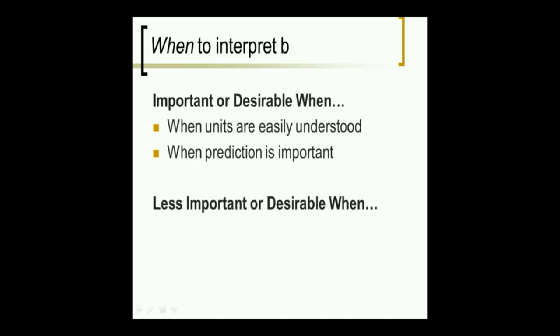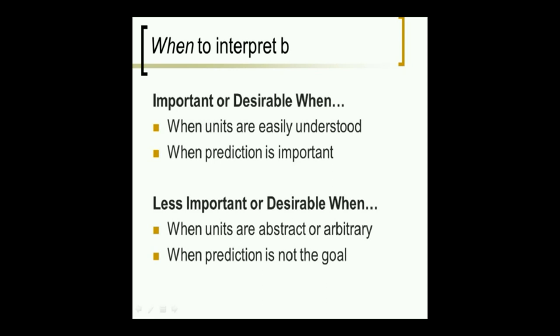And then, when prediction is important, whether we are interested in b or not, when we want to actually use our equation to predict, then we want to interpret b. When the units are abstract or arbitrary, like in a lot of psychology, Likert scales, questionnaires, and when prediction isn't what we want to do, then often we don't bother to interpret b. Regression isn't something you always do all the time. It's more like a toolbox.